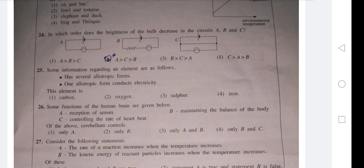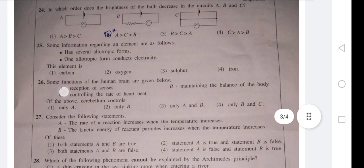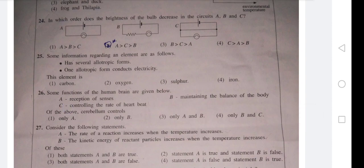Question 24: In which order does the brightness of the bulb decrease in circuits A, B, and C? Now A, if you take, there it will shine brightly. B has a resistor, so it will shine less brightly. Then C will be the lowest one. So A, B, C is the correct order, first one.